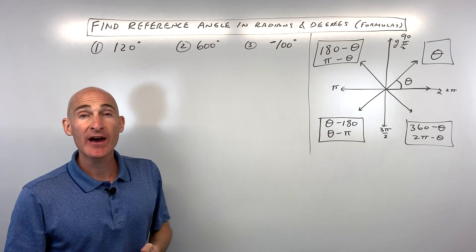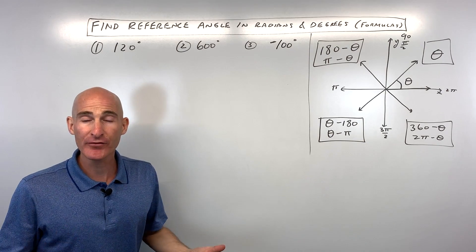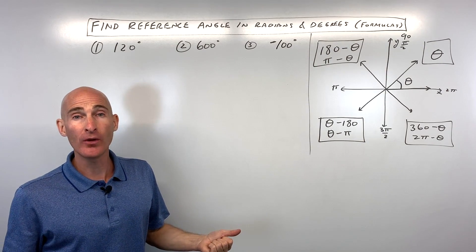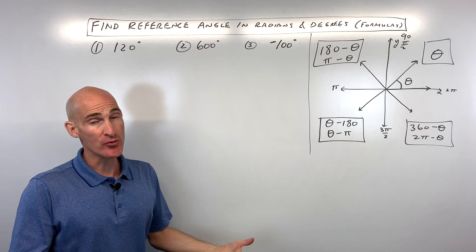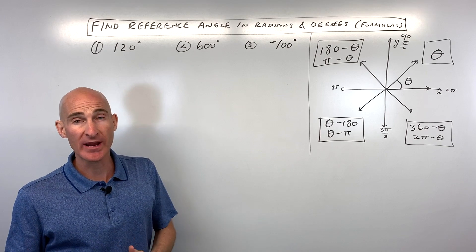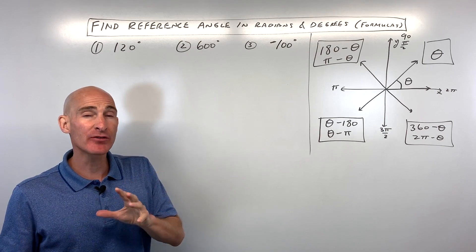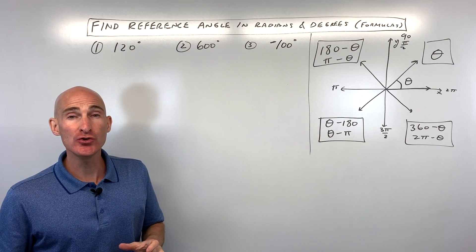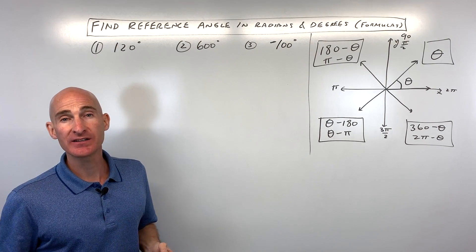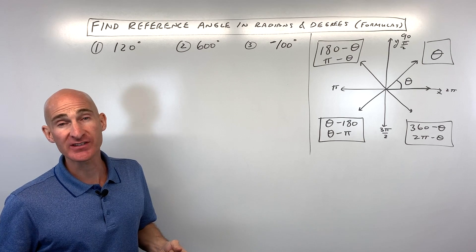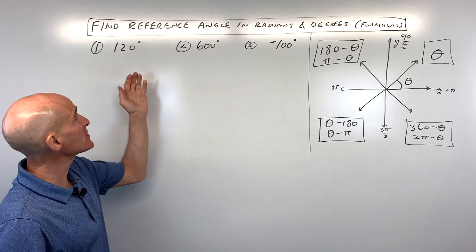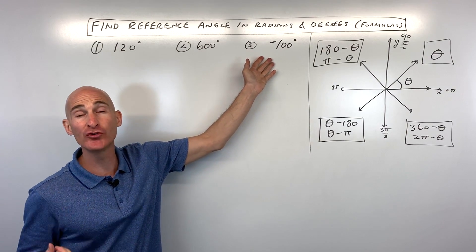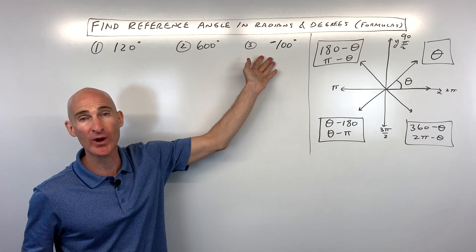In this lesson, you're going to learn how to find the reference angle when you're given an angle in degrees or in radians, and we're going to talk about the formulas that you can use to find that reference angle. First, let's do some problems with degrees, and then we'll do some problems with radians.